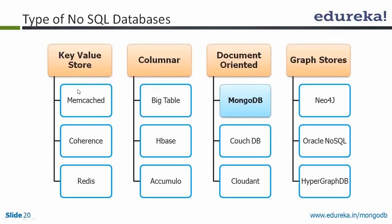Memcached falls under key-value stores and they are very fast. For columnar databases there is BigTable from Google, HBase from Apache, Accumulo, and Cassandra also falls under columnar. For document-oriented databases, MongoDB is the main example along with CouchDB, Cloudant, and Couchbase. For graph stores, Neo4j, Oracle NoSQL, and HypergraphDB are examples. As mentioned, there are about 150 NoSQL databases so it's difficult to list them all.